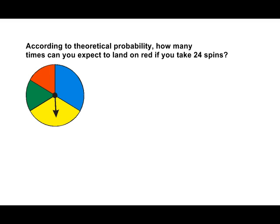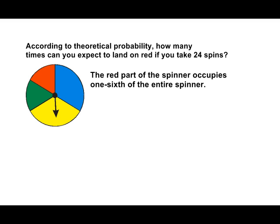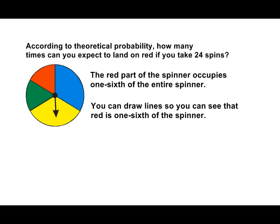Well, first, let's examine the red section of the spinner. The red part of the spinner occupies one-sixth of the entire spinner. To figure out exactly what fractional part the red space occupies on the spinner, simply divide the spinner so all of the spaces are equal in size.